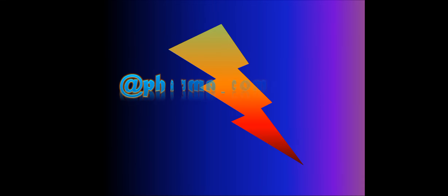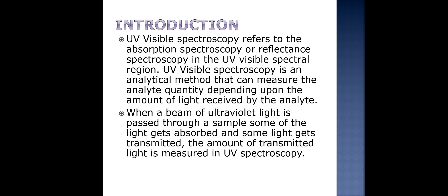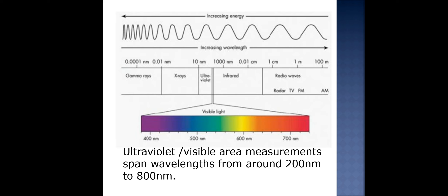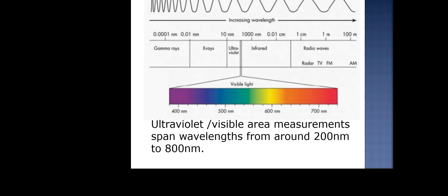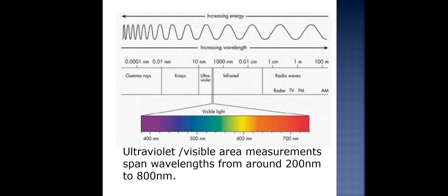Welcome to my channel Pharma Companions. Today we will discuss about UV visible spectrophotometer. Earlier we have already discussed UV visible spectroscopy. UV visible spectroscopy refers to absorption spectroscopy or reflecting spectroscopy in the UV visible spectral region. When a beam of ultraviolet light is passed through a sample, some of the light gets absorbed and some gets transmitted. The amount of transmitted light is measured, and the analyte quantity and quality can be determined. The UV visible spectroscopy wavelength spans from 200 to 800 nm, as shown in this image.